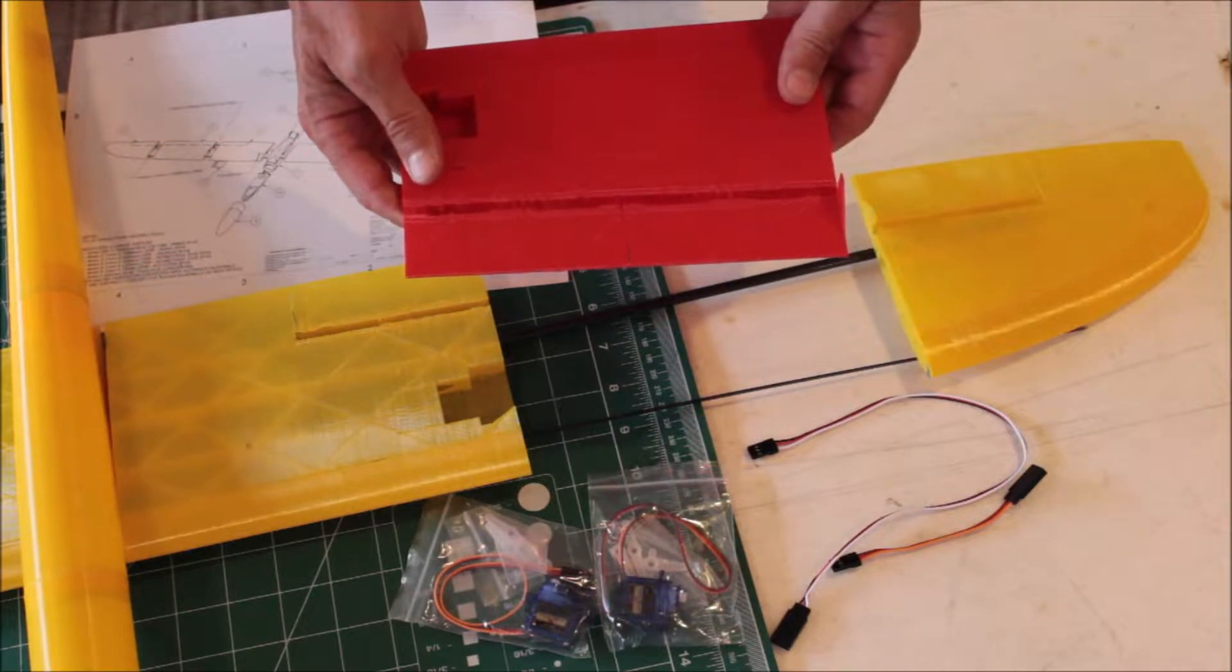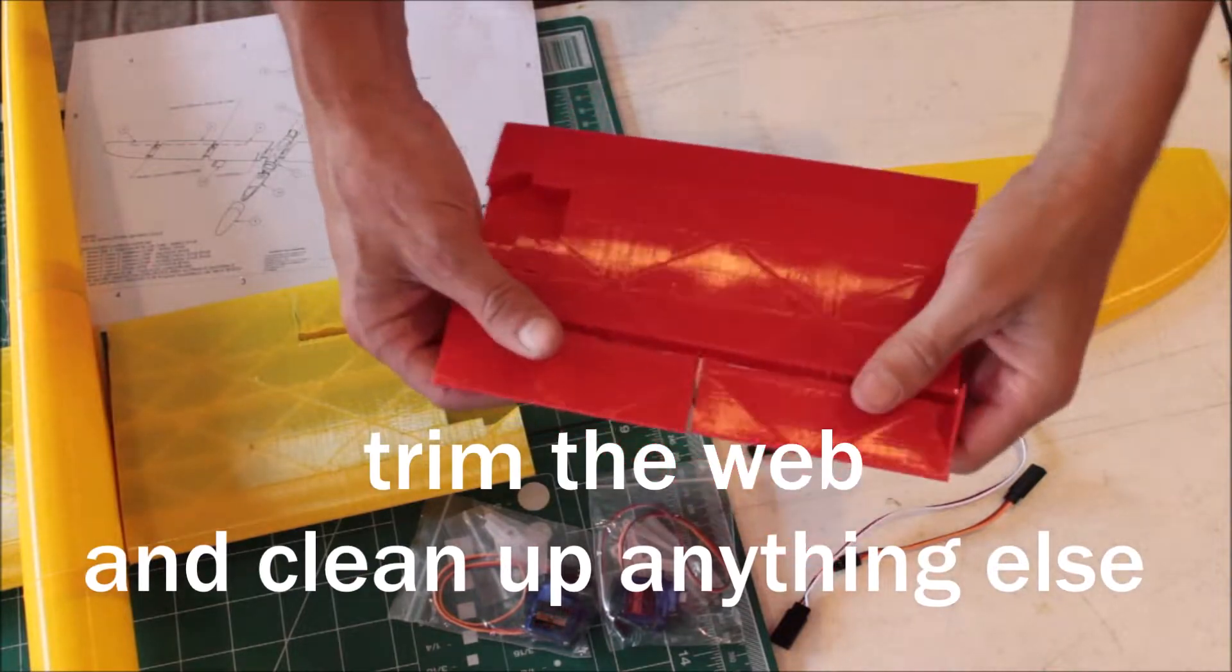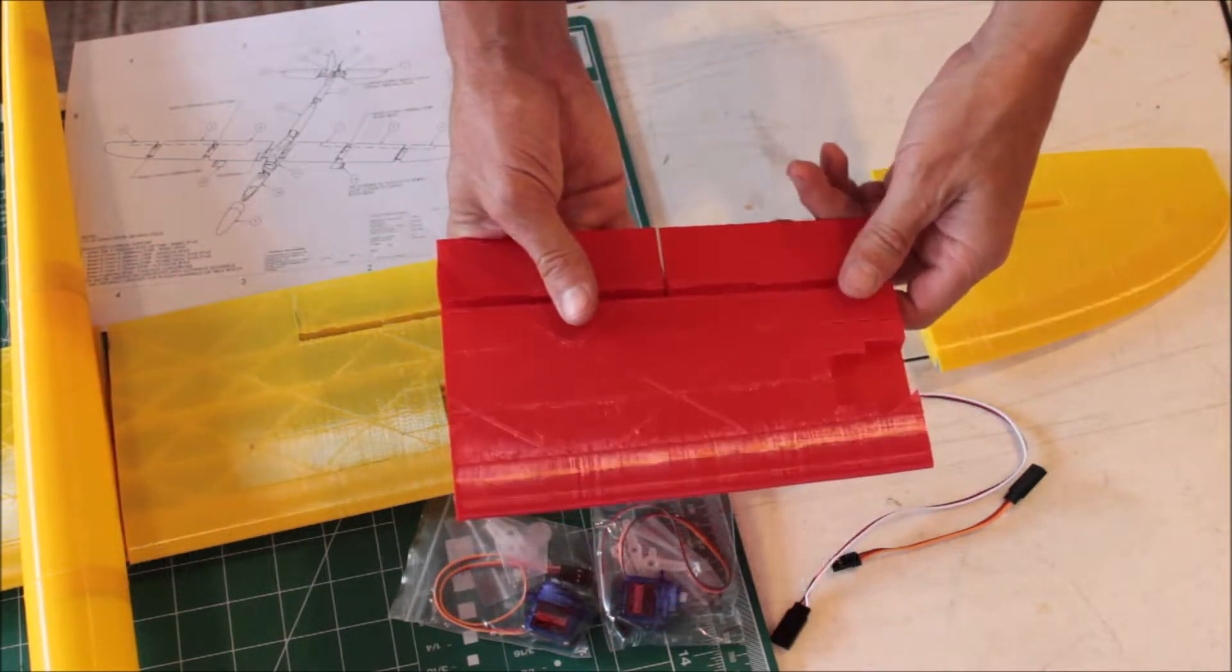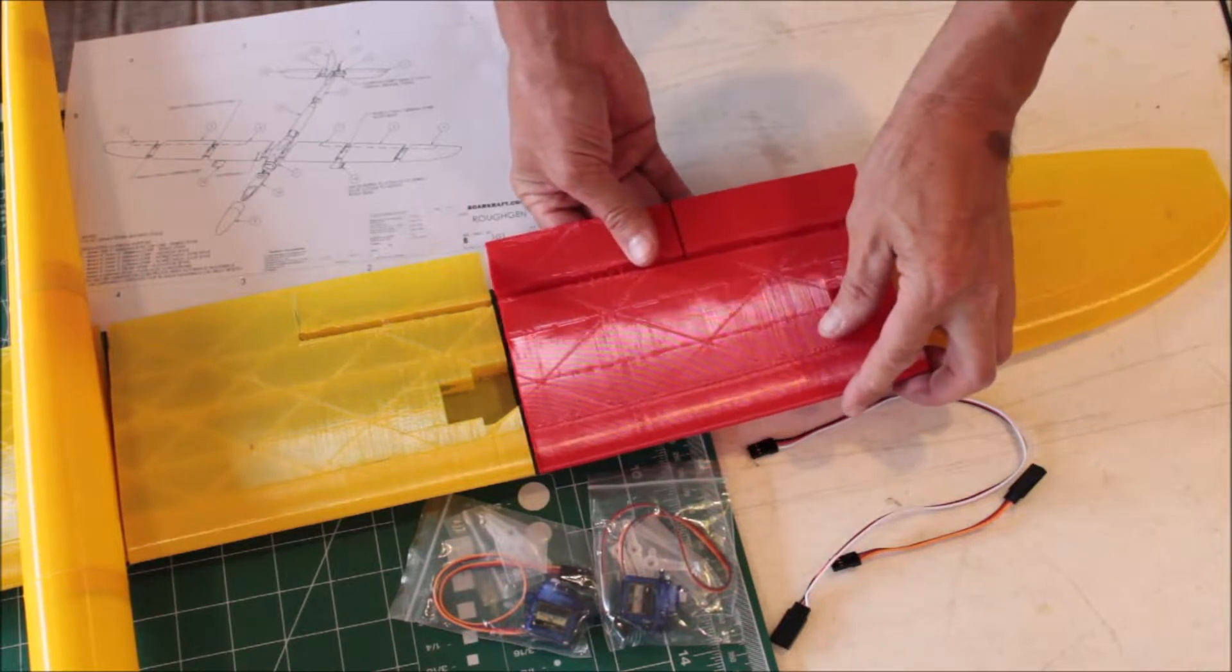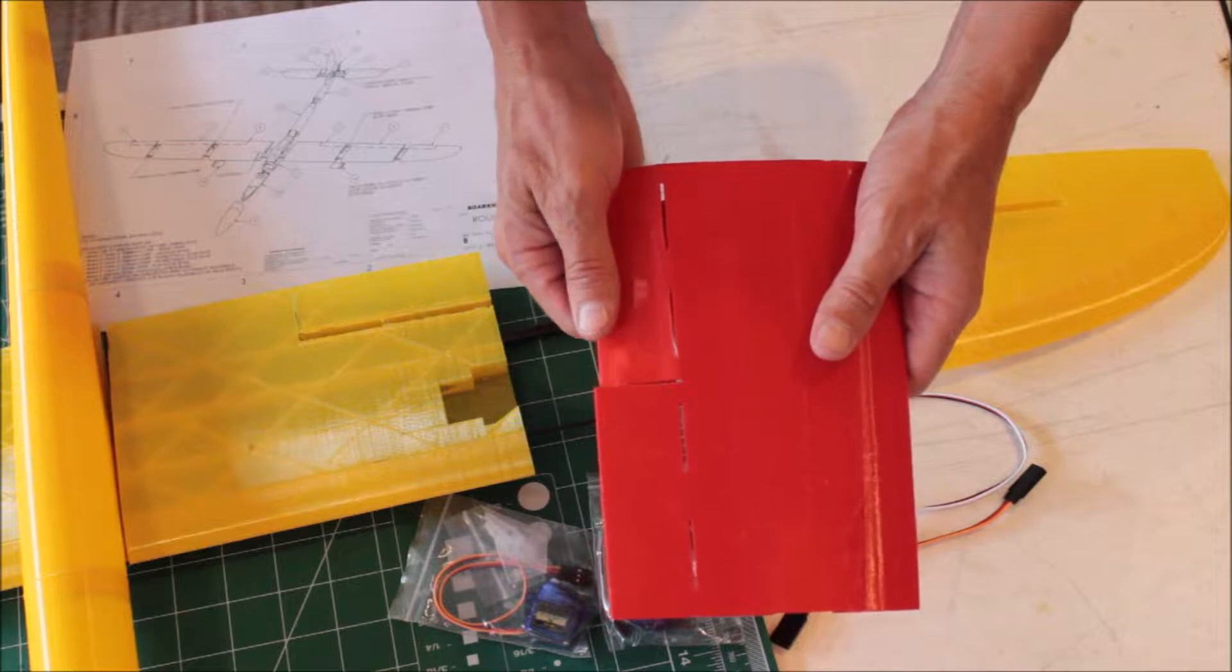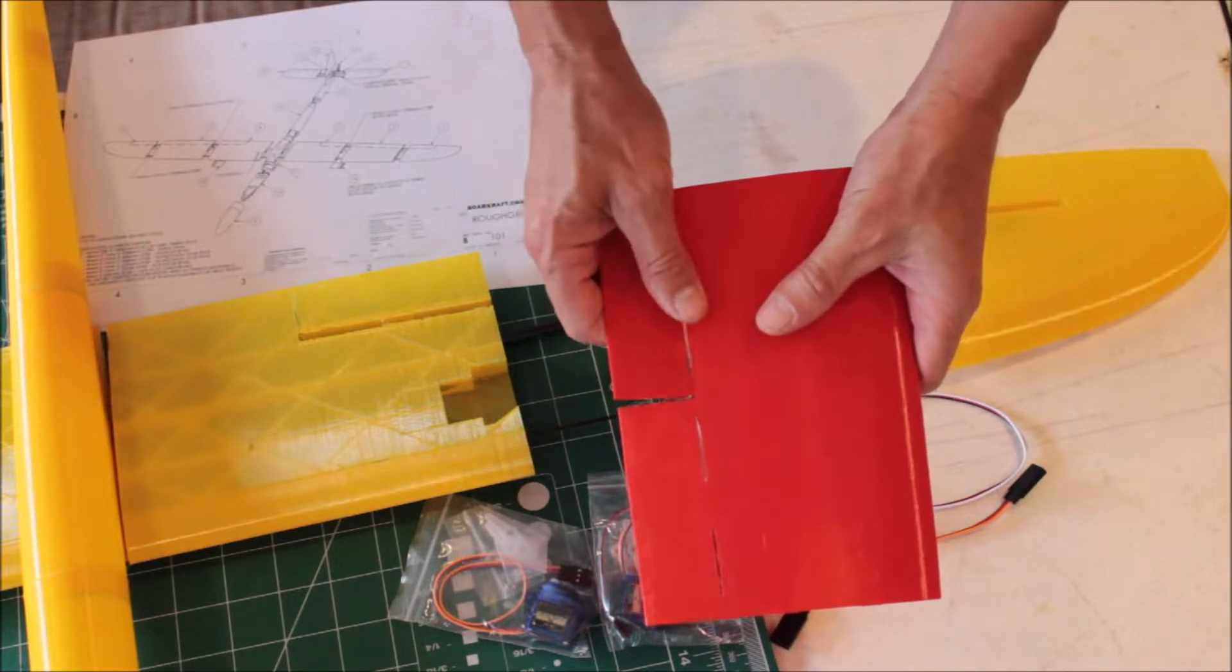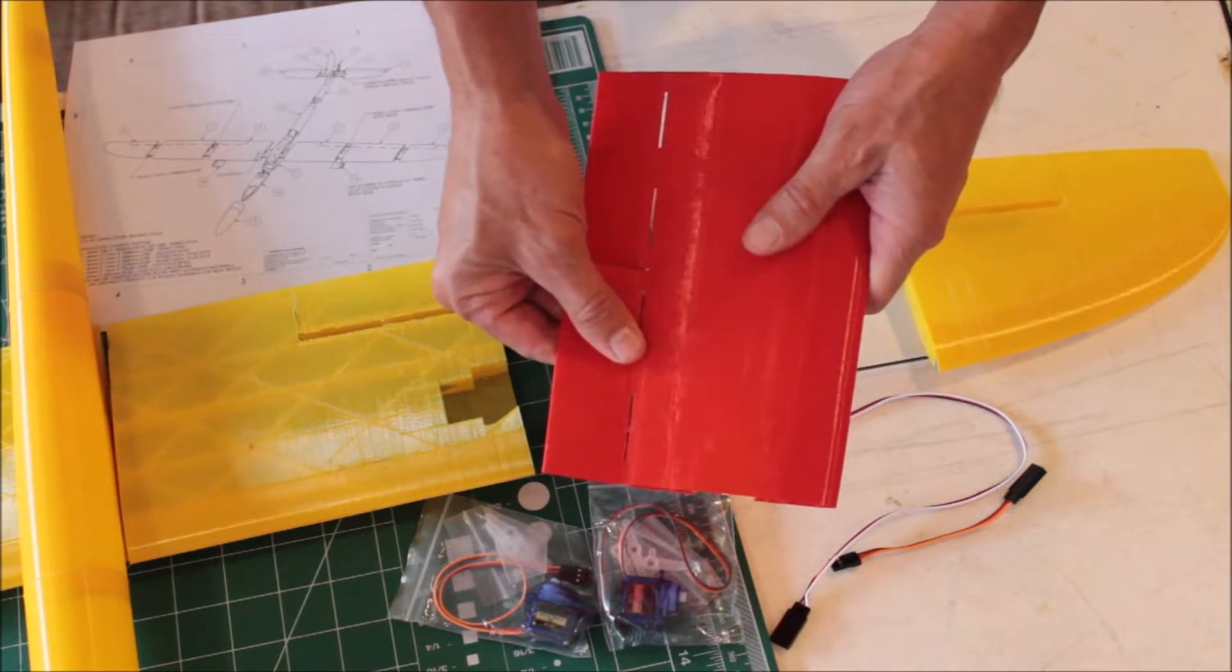So we need to get these ready. Now we have the outer and inner separated, so we can do our hinges just like we did with the other ones. Follow the same procedure.